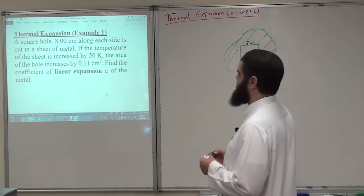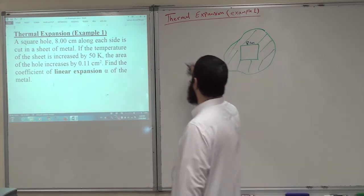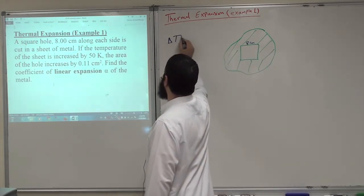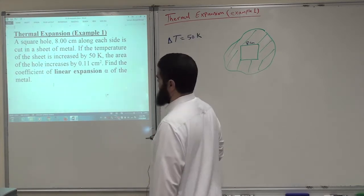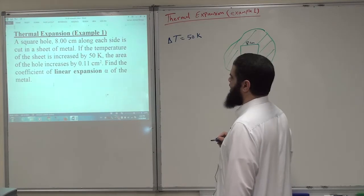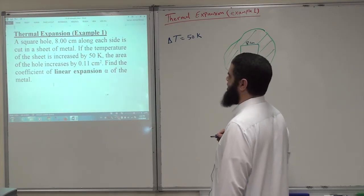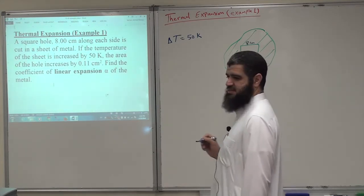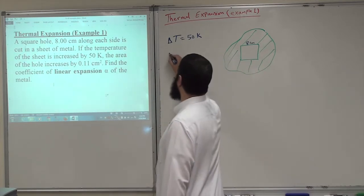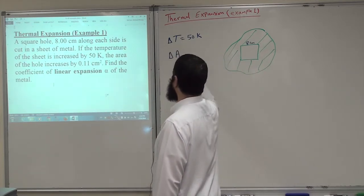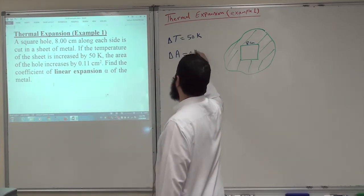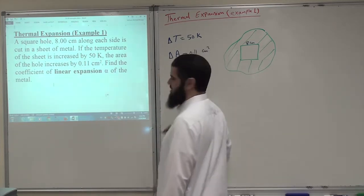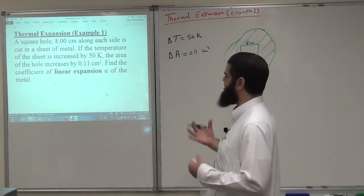If the temperature of the sheet is increased by 50 Kelvin, so delta T is plus 50 Kelvin has been increased. The area of the hole increases by 0.11 centimeter square. So this is the change in the area of this hole is 0.11 centimeter square. It is given to us that it increases.